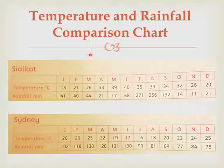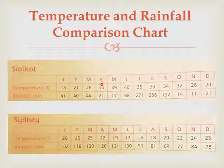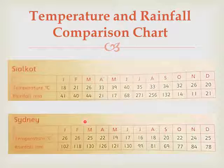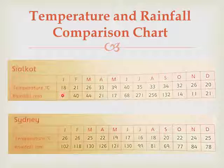With the help of these charts, you can compare the climatic conditions of Sydney and Sialkot, including rainfall and temperature. For example, in January, Sialkot has a temperature of 18 degrees Celsius with average rainfall of 41 mm, whereas Sydney has 26 degrees Celsius with average rainfall of 102 mm.